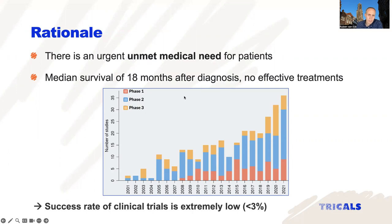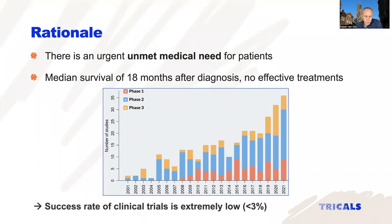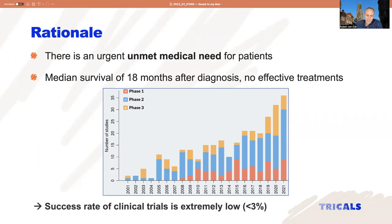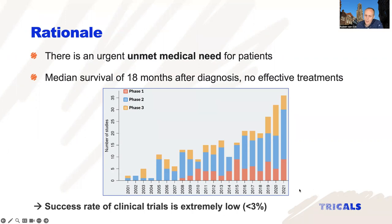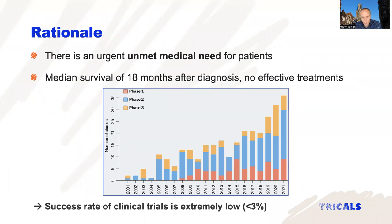This is a readout from the clinicaltrials.gov registry with all the phase one, two, and three trials that have been registered there. What you can see is that there is a clearly increasing trend over time. If we update this table to last year and to this year, we can see an even larger number of clinical trials being conducted. So it's a very active field, and that's very hopeful.